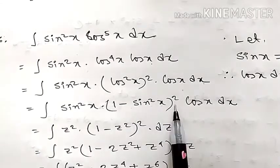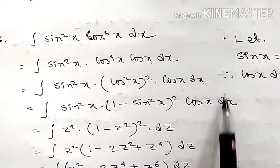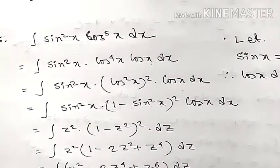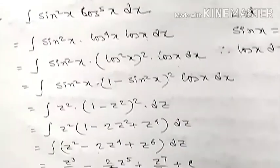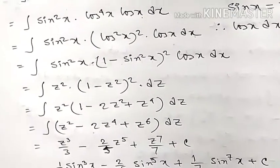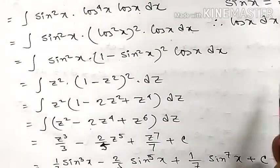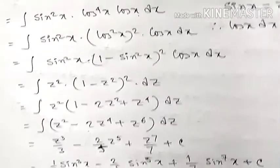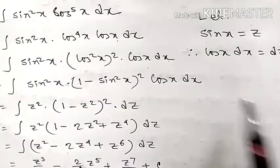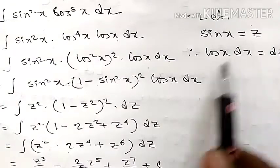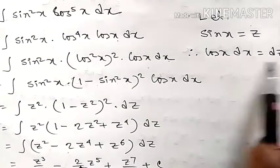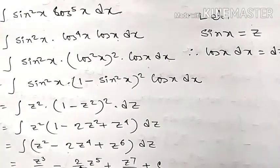Now, using substitution: let z = sin x, so dz = cos x dx. The integration becomes expressed in terms of z.